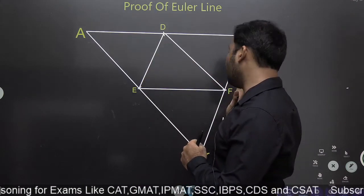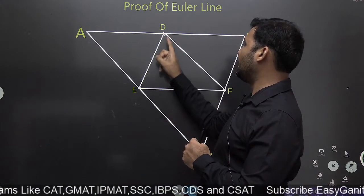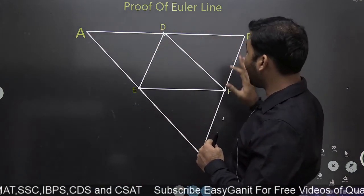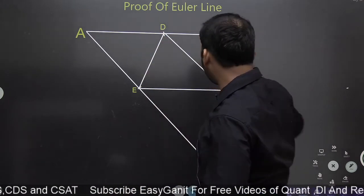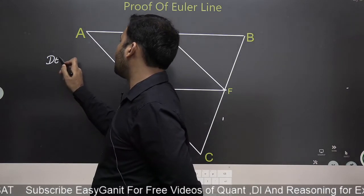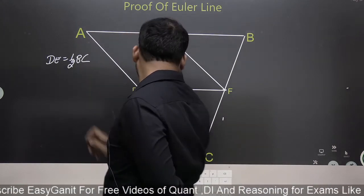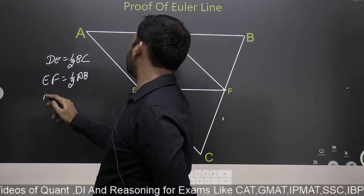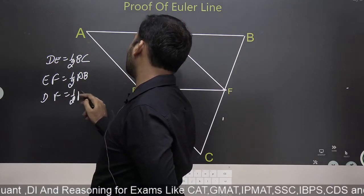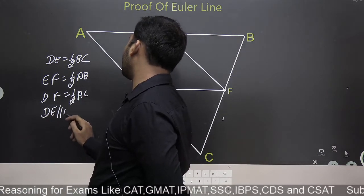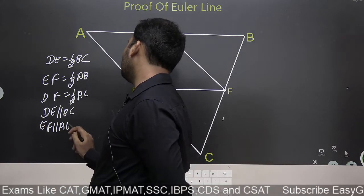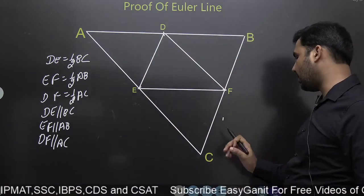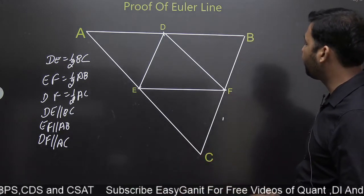By the midpoint theorem, the length of DE will be half of BC. Similarly, the length of EF will be half of AB, and the length of DF will be half of AC. Also, DE is parallel to BC, EF is parallel to AB, and DF is parallel to AC. Triangle ADE is similar to triangle ABC — this is basic midpoint theorem that you should know.